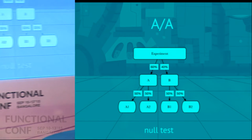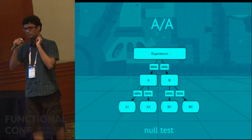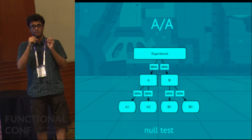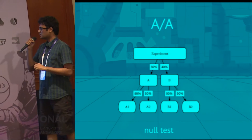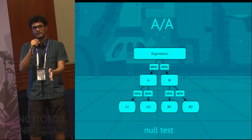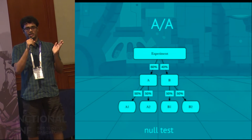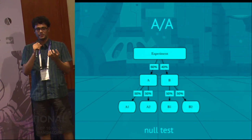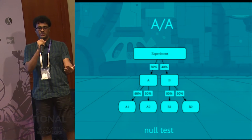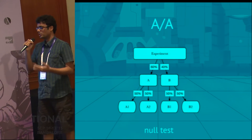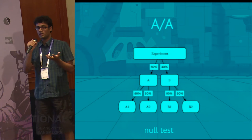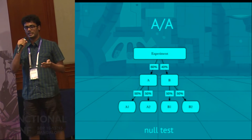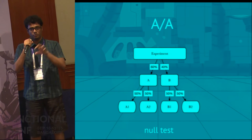Another vital feature of any experimentation platform is the AA test, which is essentially a null test. It helps you remove the possibility of the null hypothesis by comparing a treatment against itself. You have an A bucket divided into A1 and A2 — the same traffic, but split. This ensures that the treatment is responsible for your measurements and not just randomness. When reports on A1 and A2 are similar, you know you've attained statistical significance. It also helps test the experimentation platform itself to ensure there's no bias in how we're bucketing users.